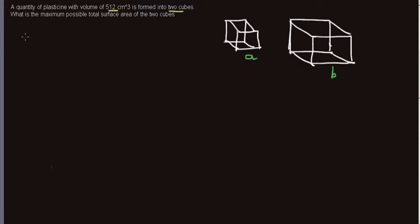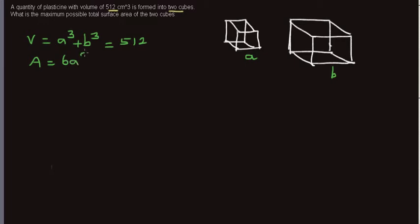The total volume of these two cubes is also 512, so we can write: A³ + B³ = 512. The total surface area is 6A² + 6B², since each cube has 6 faces each of area A² or B² respectively.